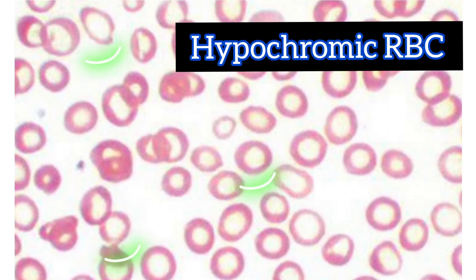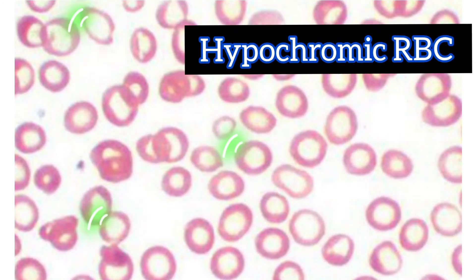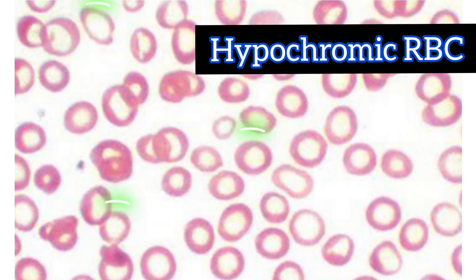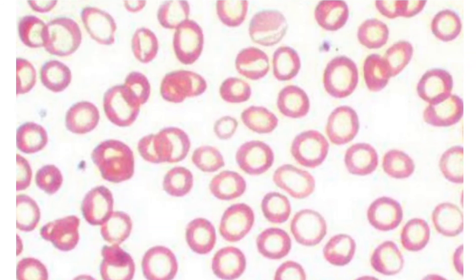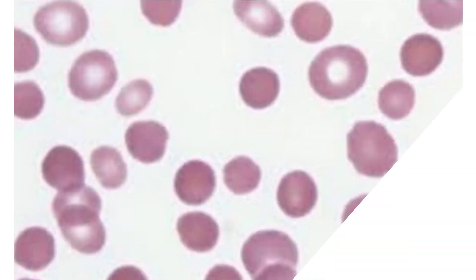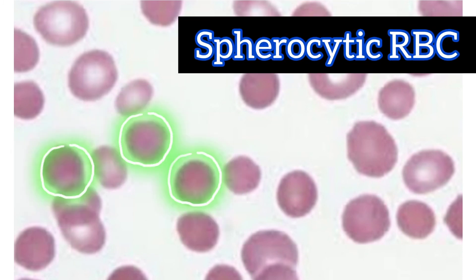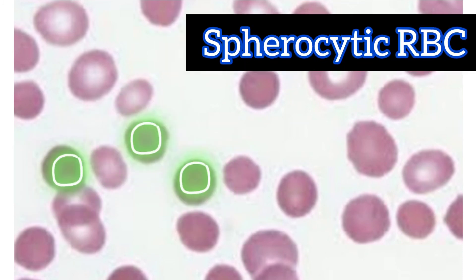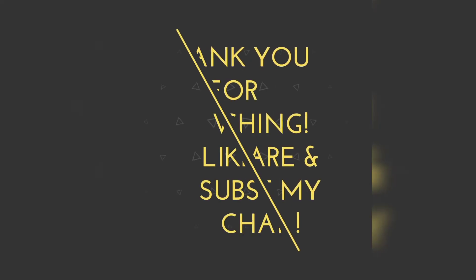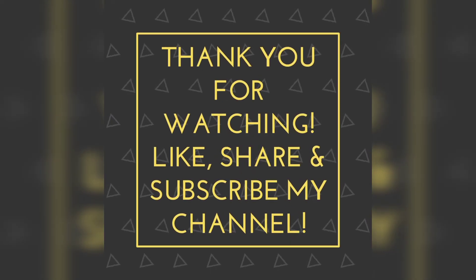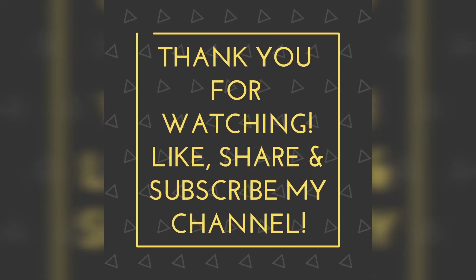In this particular image you can see a hypochromic red blood cell where the central one-third is increased. In the second image you can see a spherocyte where the central one-third pallor of the red blood cell is lost. Thank you for watching, see you soon in the next video — take care and bye bye.